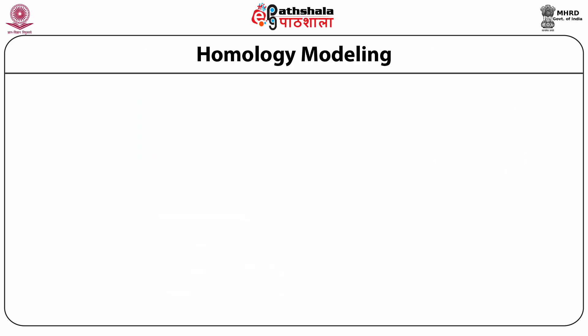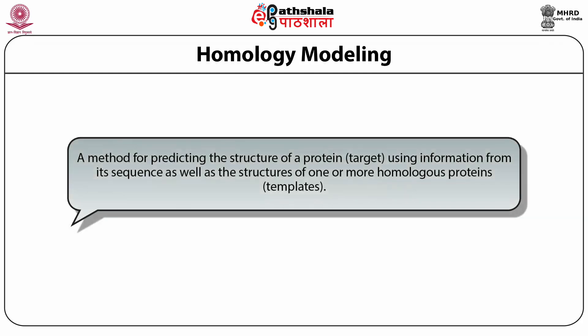This method of comparative modeling, also known as homology modeling, is a method for predicting the structure of a protein — let's call it the target — using information of its sequence as well as the structures of one or more homologous proteins, let's call them the templates.